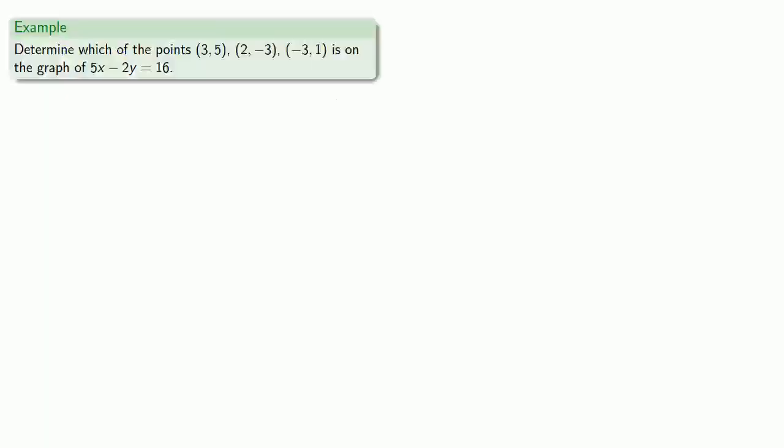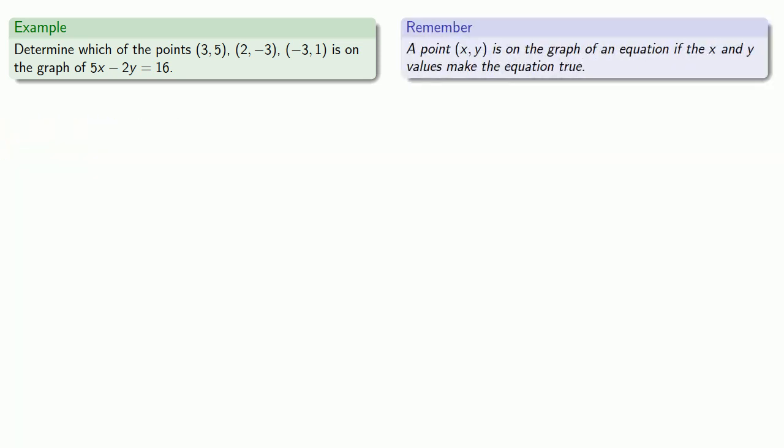So for example, let's try to determine which of the points (3, 5), (2, -3), (-3, 1) is on the graph of 5x - 2y = 16. Remember, a point is on the graph of an equation if the x and y values make the equation true. The point (3, 5) has x equal to 3, y equal to 5. We'll check to see if these values make the equation true. Equals means replaceable, so we'll replace x with 3 and y with 5.